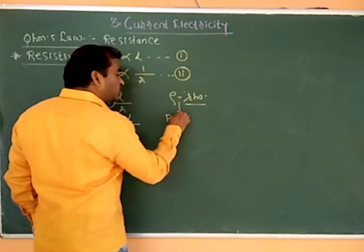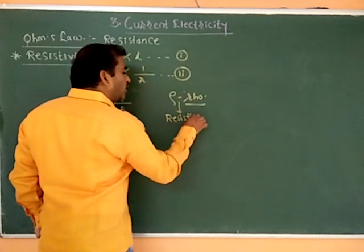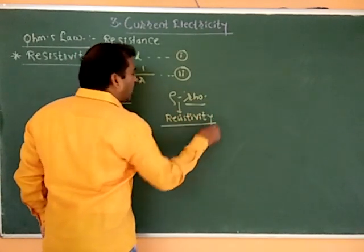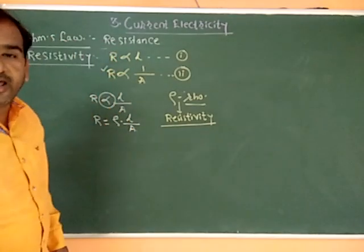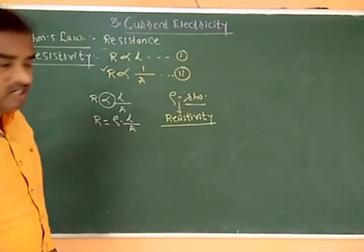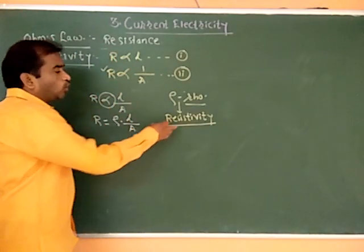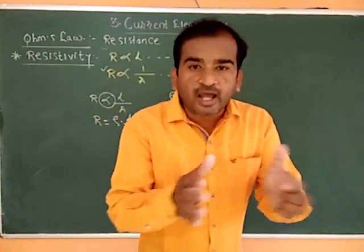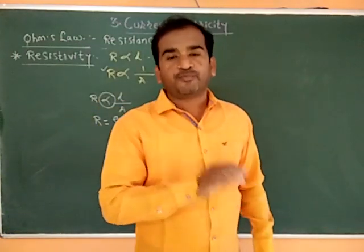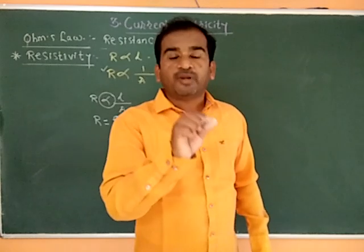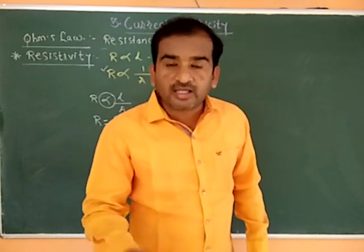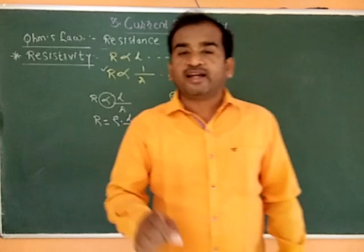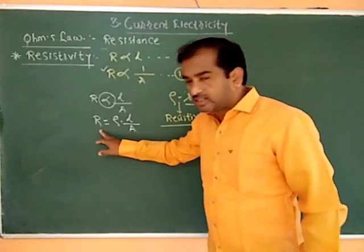This proportionality constant is known as resistivity. It is a property of the material, and it represents how much resistance a particular material offers per unit length and unit area of cross-section.